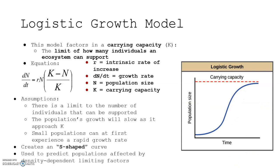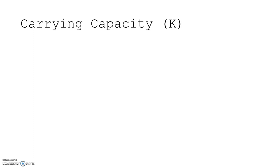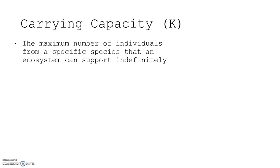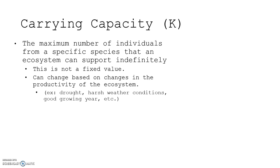Carrying capacity, or K, is the maximum number of individuals from a specific species that an ecosystem can support indefinitely — not short term, but over the long term. It's not a fixed value; it can change based on changes in the productivity of the ecosystem, such as drought, harsh weather, or a good growing year. If there's ample food, the carrying capacity may increase; if there's drought, the carrying capacity would be reduced.